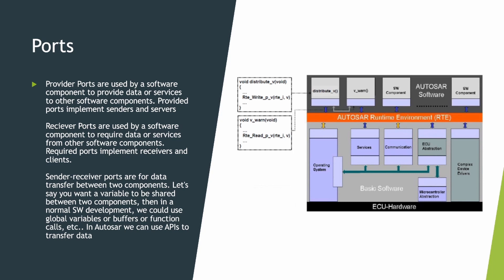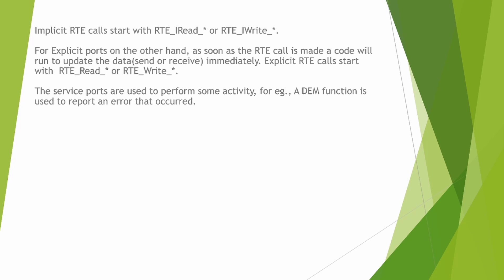This was an example of sending data via a port. There could also be service ports, meaning we could call a function from one software component and it will execute something in the other component. In the case of sender and receiver ports, there are two types of RTE calls: explicit and implicit, based on the data transmission method. In the case of explicit calls, as soon as the RTE function is called, the data is transferred. In the case of implicit calls, the call will happen but the data will not immediately be returned to the source — instead, the write will happen only sometime after our function has finished.